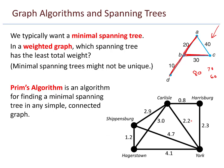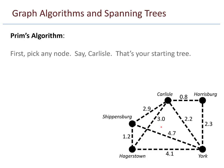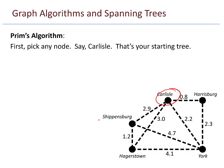Consider this graph — certain towns in South Central Pennsylvania — where some company is going to lay cable from town to town, and the cable all has to be connected. Here are the costs in millions of dollars to lay cable from one town to another. We'll use Prim's algorithm to find a minimal spanning tree. First, pick any node — say Carlisle for example. That's your starting tree: just that single node with no edges.